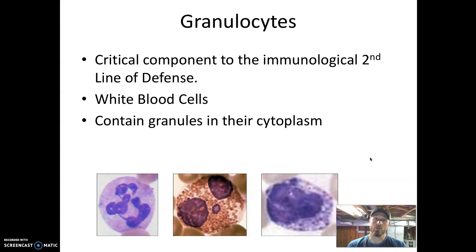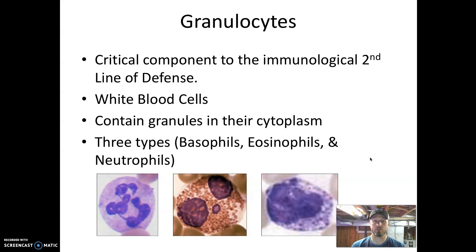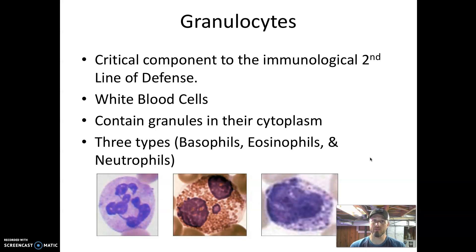As we talk about our immune response, we're going to talk about three kinds of granulocytes: basophils, eosinophils, and neutrophils. We'll address what they each do and then think about the core set of traits we want to be aware of for granulocytes.